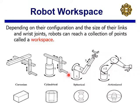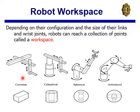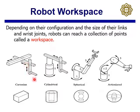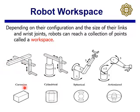This is a Cartesian robot — the Z axis goes up and down, Y axis goes in and out, X axis goes left and right. This is the manipulator and this is the end effector. So the end effector can go up and down, in and out, and left and right. The work envelope of a Cartesian robot looks like a cube.